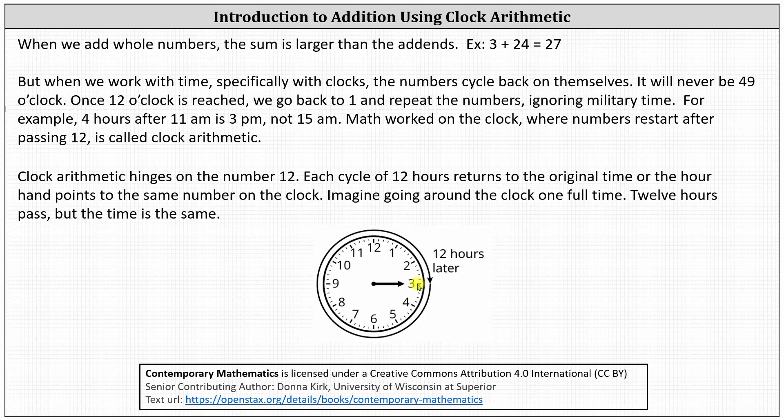Right now, the hour hand points at 3 for 3 o'clock. 12 hours later, the hour hand rotates one complete rotation clockwise around the clock, returns back to 3, and it is still 3 o'clock.